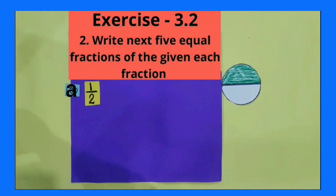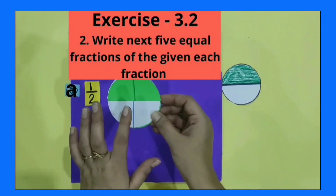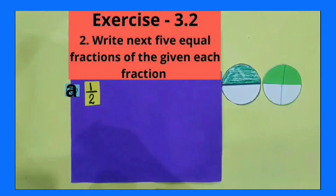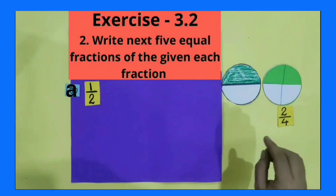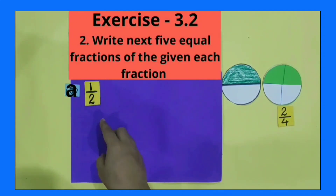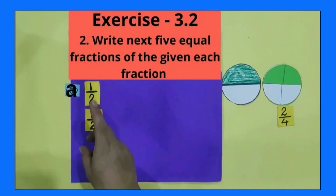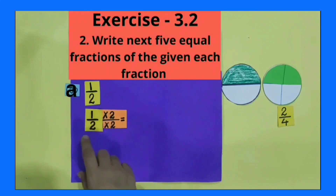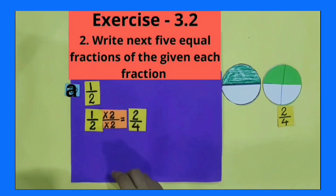I have a circular shape which is divided into 4 equal parts, out of which 2 parts are colored. Compare these 2 circular shapes — are these shapes equivalent to each other? Yes, these shapes are equivalent to each other. 2 parts out of 4 equal parts means 2 by 4. Tell with which number will I multiply 1 by 2 to get 2 by 4? Yes, with number 2. 1 by 2 multiplied by 2 by 2: 1 multiply 2 is equal to 2, and 2 multiply 2 is equal to 4. The first equivalent fraction is 2 by 4.